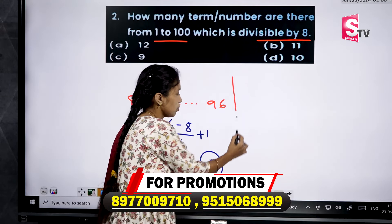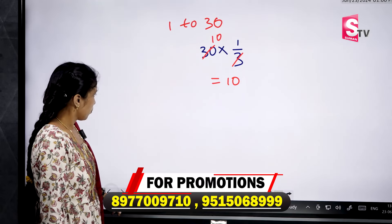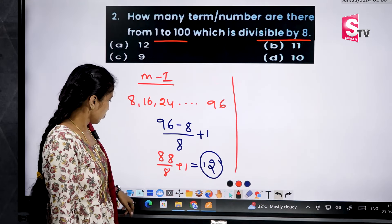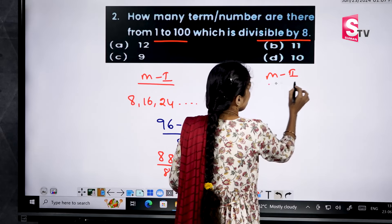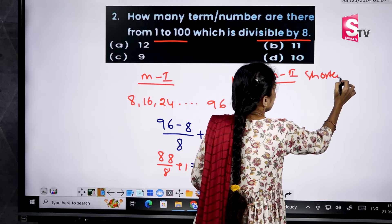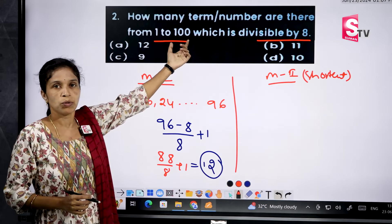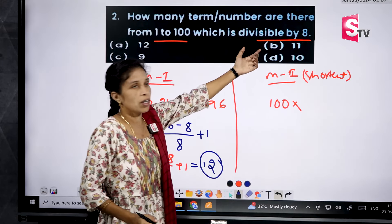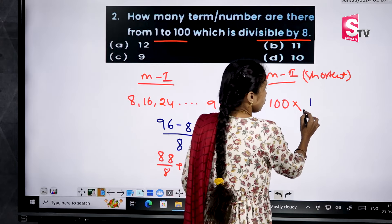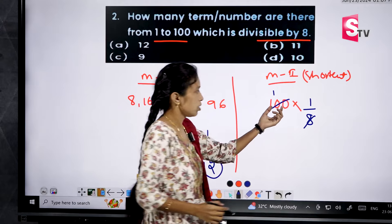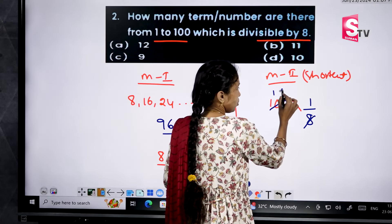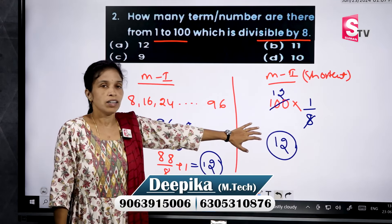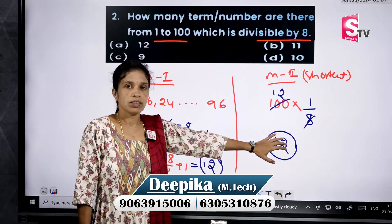Now the shortcut method for this question. Total numbers we have is 100. Write down 100 into 1 by 8. Doing the division: 8 goes into 100 twelve times. So we are getting 12 terms from 1 to 100. See how quickly we are solving this question — the shortcut method is the best method for these types of questions.